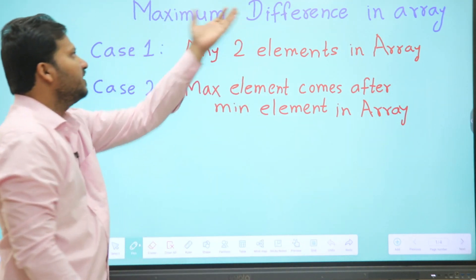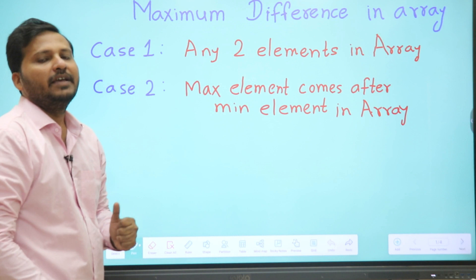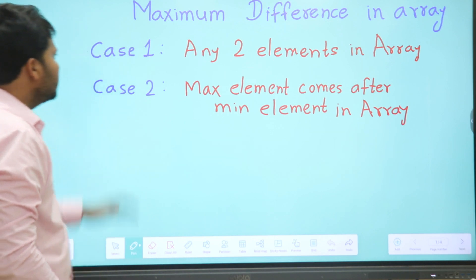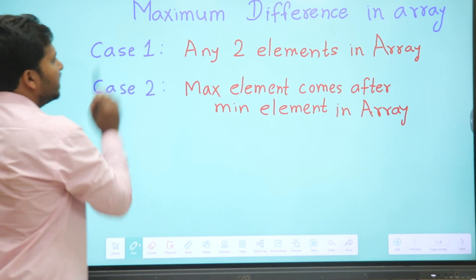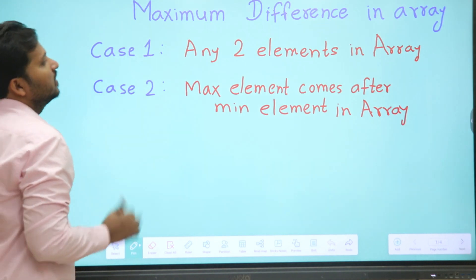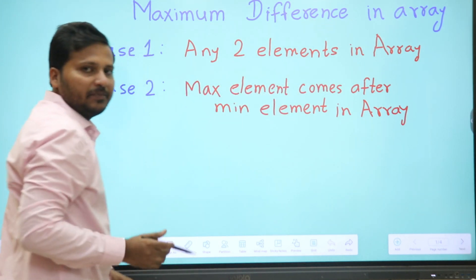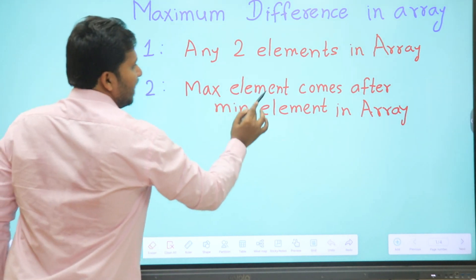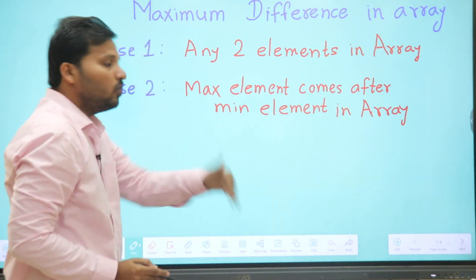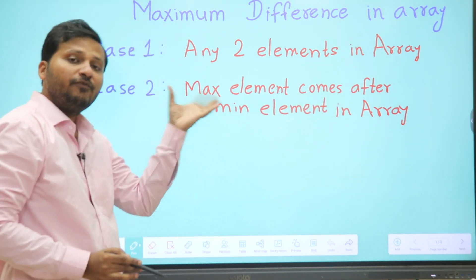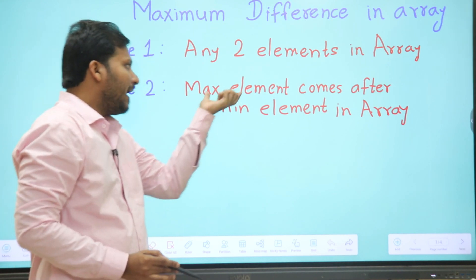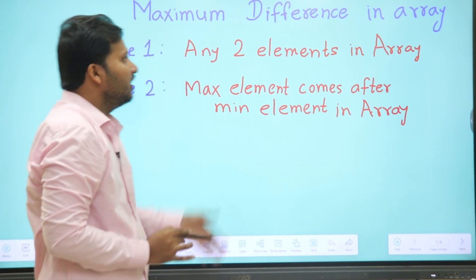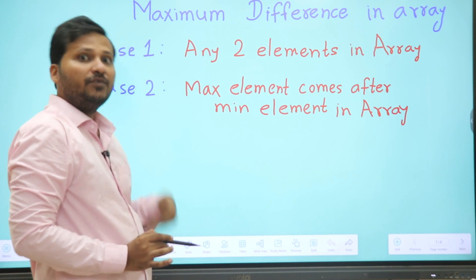Today we are going to see how to find out the maximum difference in an array - the maximum difference between two elements. There are two cases: the first case is finding the difference between any two elements in the array, and the second case requires that the maximum element comes after the minimum element in terms of position. Let's see these two cases first and then go to the algorithm.